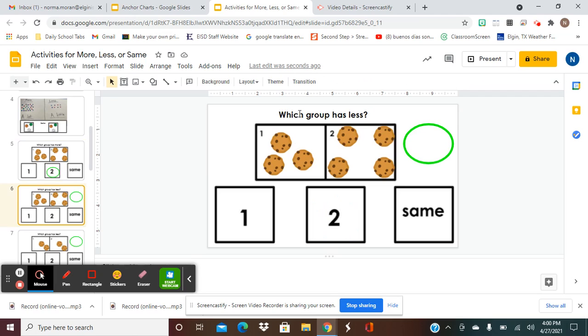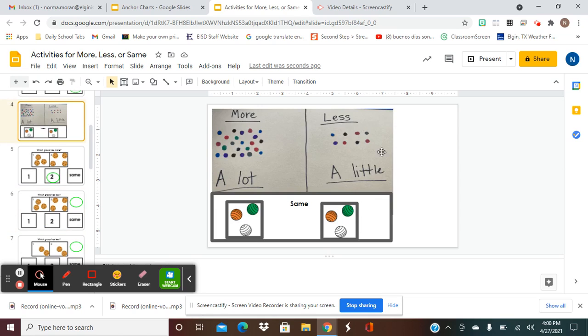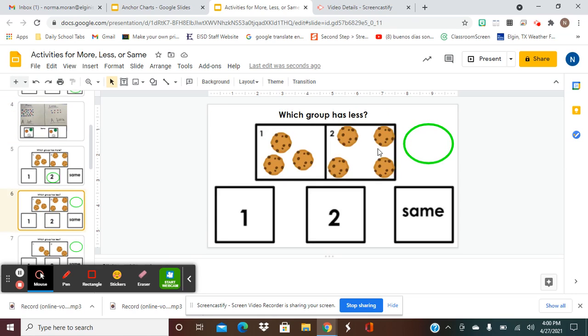Now we're looking for which group has less? Remember, less is the one that has a little bit. So is it group one or group two? Let's count the cookies just to make sure. This one has one, two, three. Group one has three cookies. And group two has one, two, three, four cookies. So which one has less?